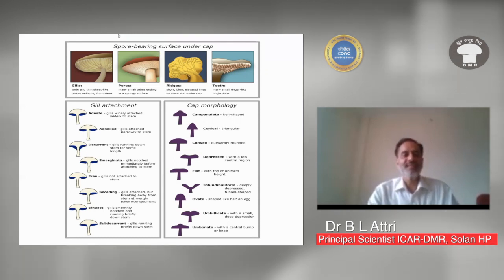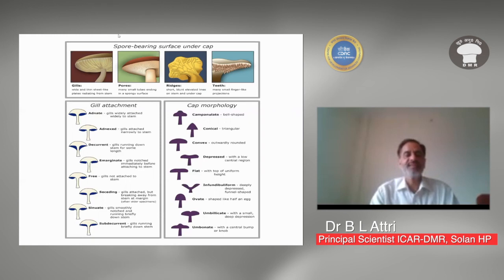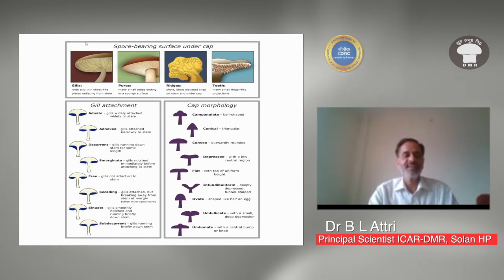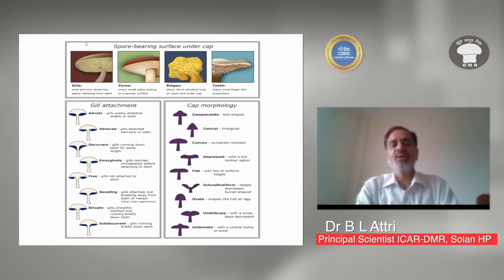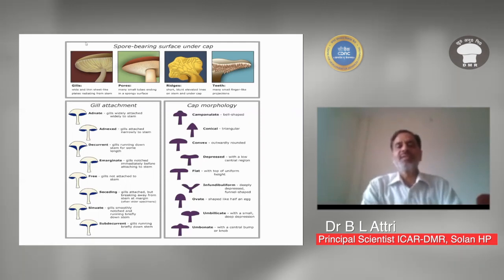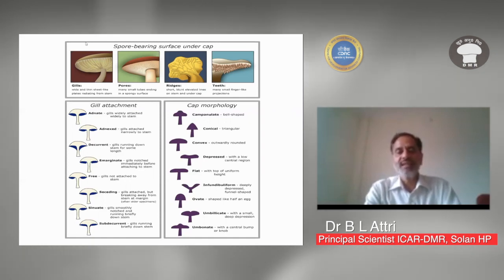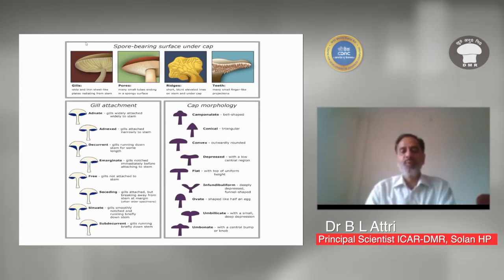Another classification is based on how the gill is attached to the stipe. There are different classes: adnate, adnexed, decurrent, marginate, free, succeeding, sinuate, and subdecurrent. There is also classification based on cap morphology: campanulate, conical, convex, depressed, flat, infundibuliform, umbilicate, and umbonate.